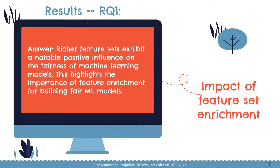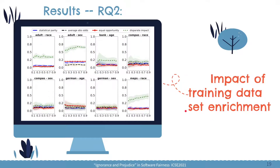This highlights how important feature enrichment is when we try to build fair machine learning software. For the second research question — the impact of training data set enrichment — the results show the horizontal line with different sizes of training sets. Interestingly, we didn't observe any unified patterns as we observed for the first research question, which means we can't say that if we use more training data, we could improve fairness. What's more interesting is that for two cases, when fairness is measured by disparate impact, fairness even gets worse when there is more training data.